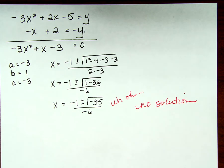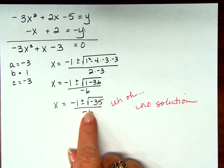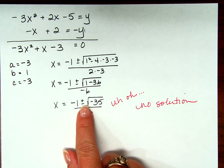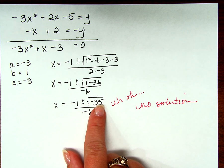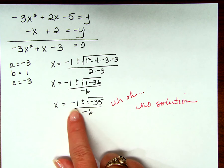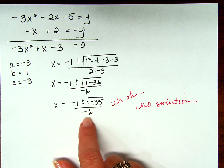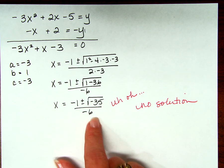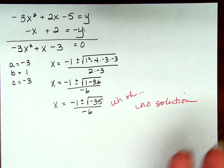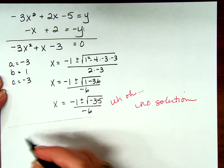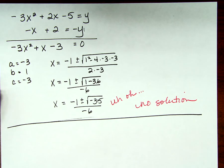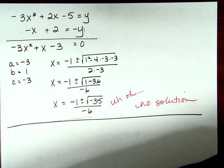Does that make sense? I'm not saying we don't know how to solve this — we can pull an i out, giving negative 1 plus or minus i root 35 over negative 6. Except that doesn't help us at all, because we're looking for the places they cross and there isn't one. Everybody understand that? So what's left? Substitution.